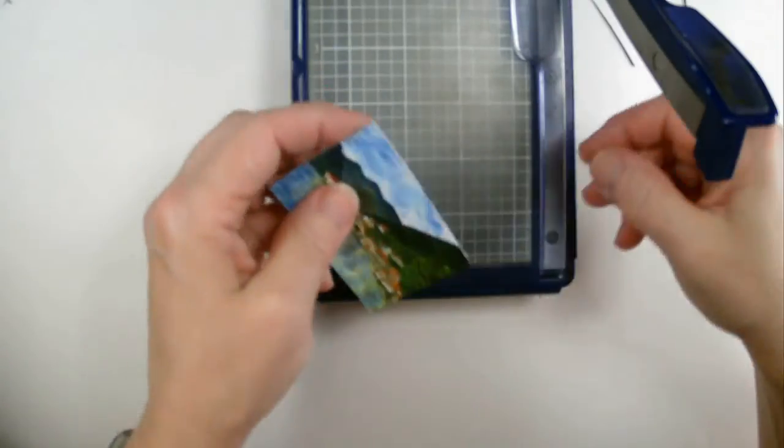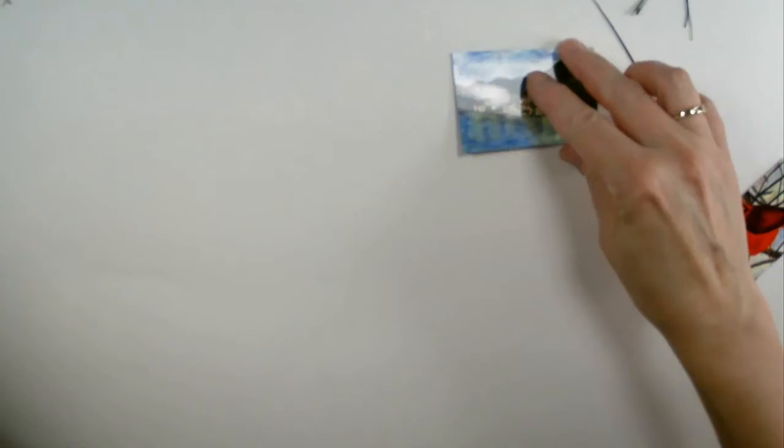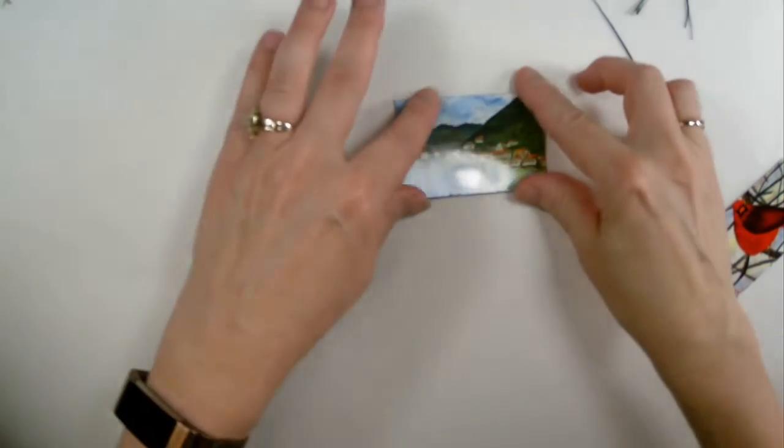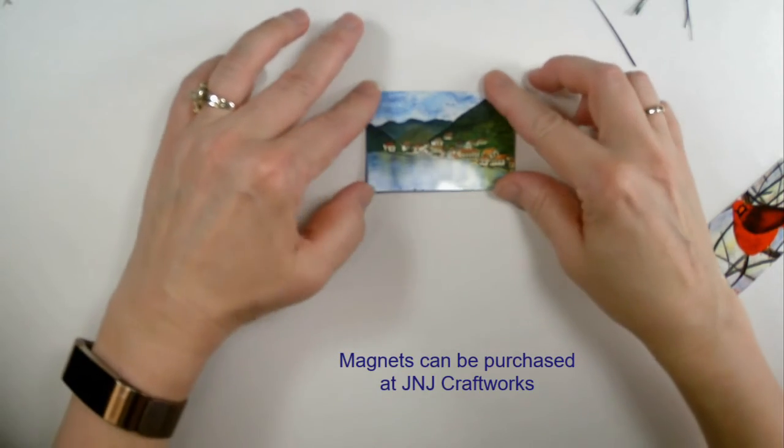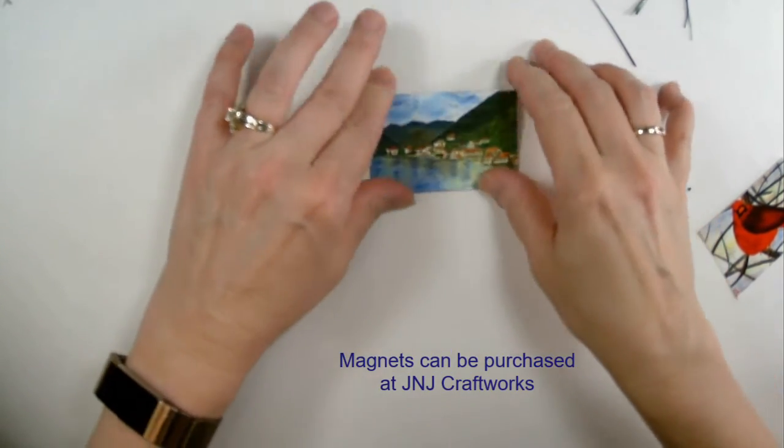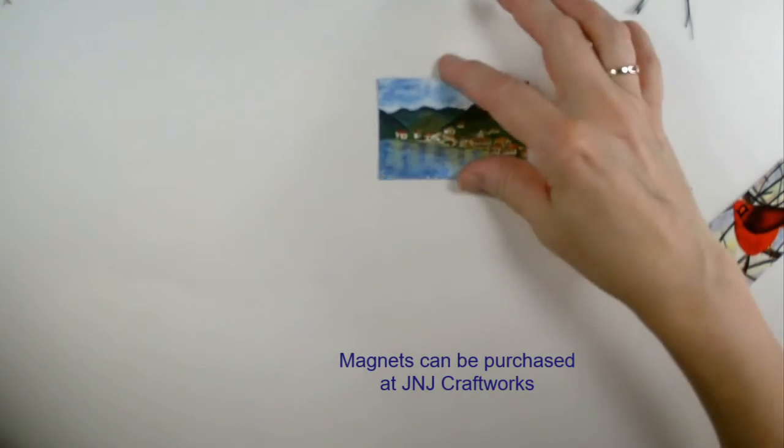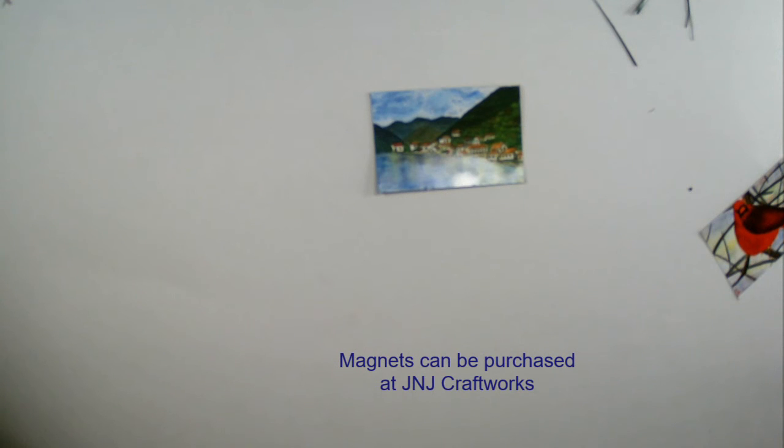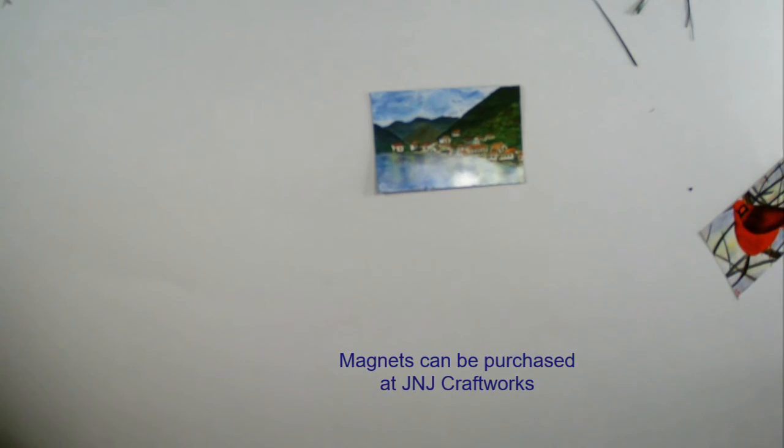I do sell these at J&J Craftworks for $2.50 a magnet, and I can sell them on my website. Right now I don't have any on my website—I need to take pictures of them. But any of my watercolor paintings can easily be made into magnets. I hope you enjoyed this little tutorial. Have a nice day and give me a thumbs up. Thank you so much!